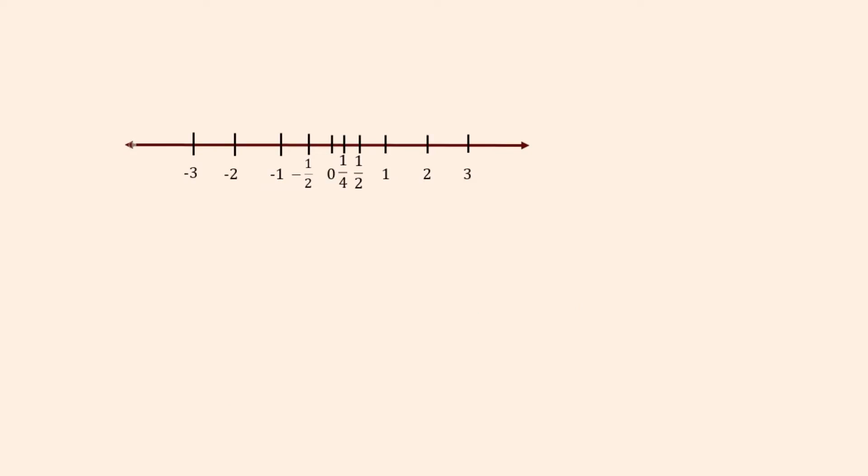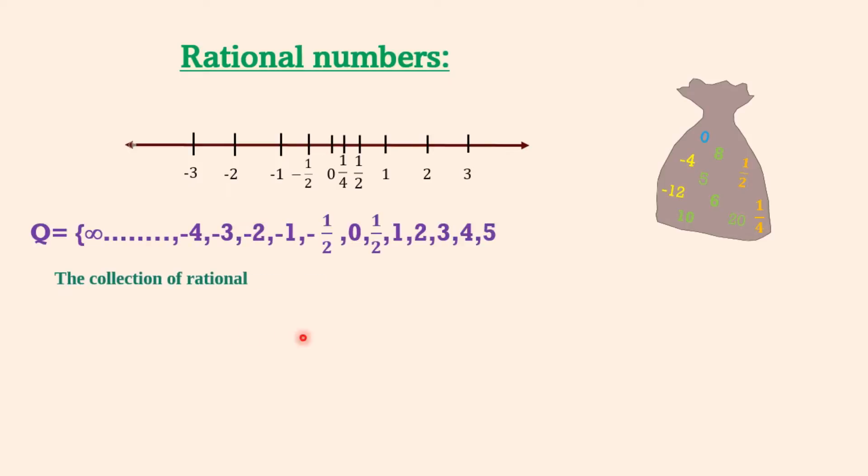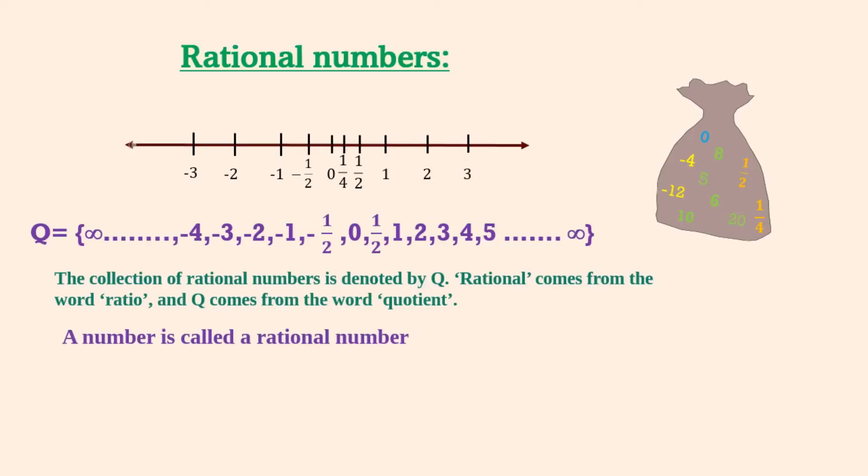Are there some numbers still left on the number line? Of course, there are numbers like 1/2, 1/4, or even -105/106. If she puts all such numbers also into the bag, it will now be the collection of rational numbers. The collection of rational numbers is denoted by Q. Rational number comes from the word ratio, and Q comes from the word quotient. A number is called a rational number if it can be written in the form p/q where p and q are integers and q ≠ 0.